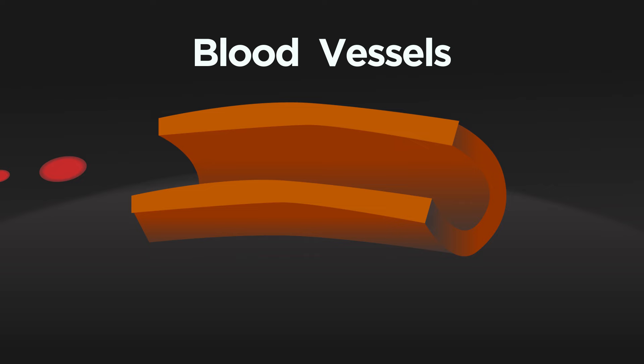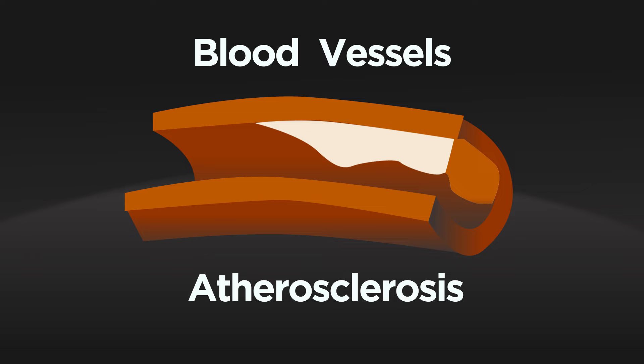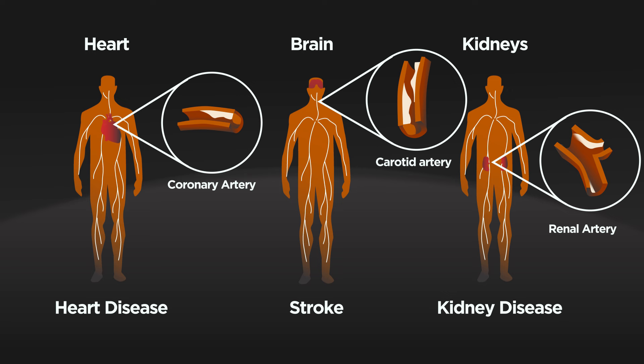Now the blood vessels. Smoking is a major risk factor for a disease called atherosclerosis. This is when a waxy substance known as plaque builds up in the arteries, making them narrower and harder for the blood to get through. This then reduces blood flow to all parts of the body. It can affect any artery in the body and will result in different diseases developing.